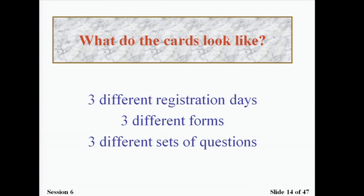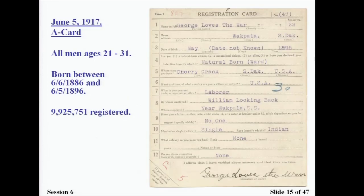What do the cards look like? There are three different registration dates, three different forms, and three different sets of questions. It appears they were trying to gain information at different times according to the age groups being registered. On June 5, 1917, all men ages 21 through 31 — born between June 6, 1886 and June 5, 1896 — were required to register at their local board. Over 9 million men registered at this time.